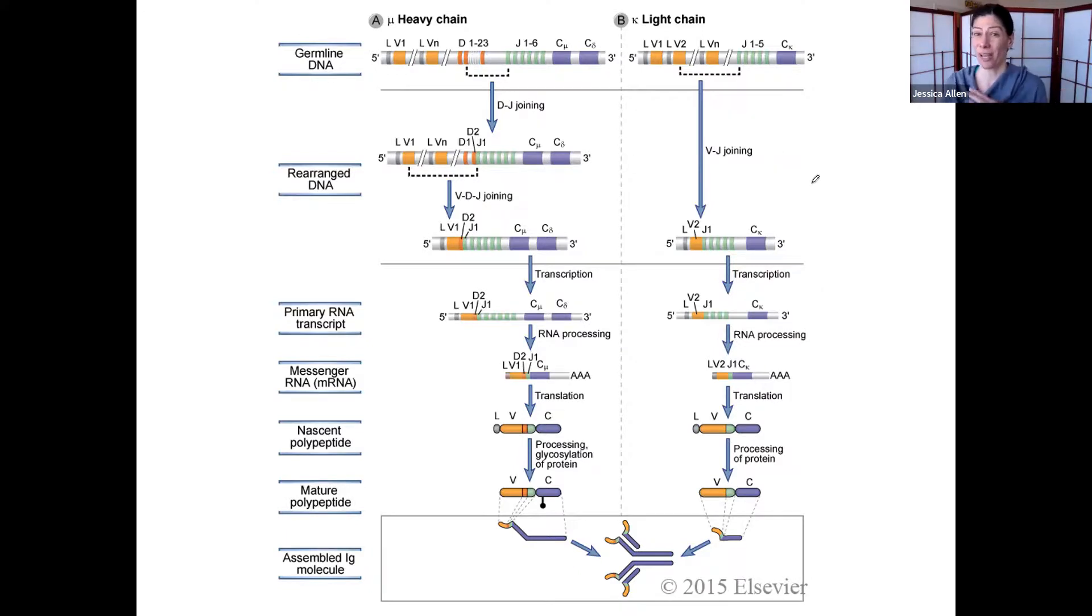And we also have two chromosomes. Because the light chain not only needs to make a functional protein after recombination, it also needs to be able to bind with that heavy chain, which is already made.